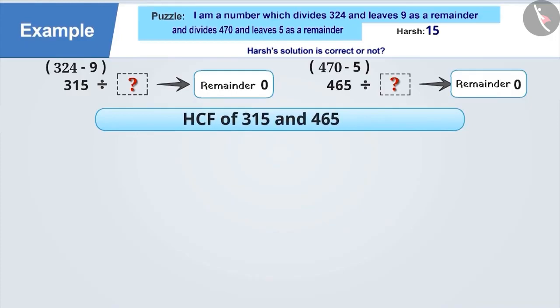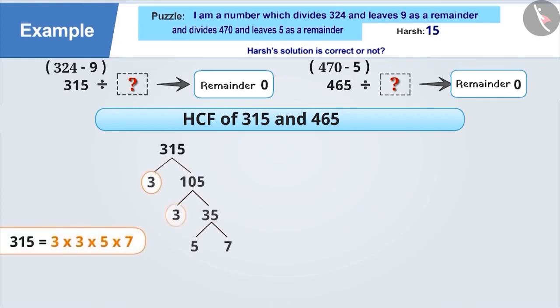Let's find out the HCF of 315 and 465. First, perform the prime factorization of 315. We get, 315 is equal to 3 into 3 into 5 into 7.